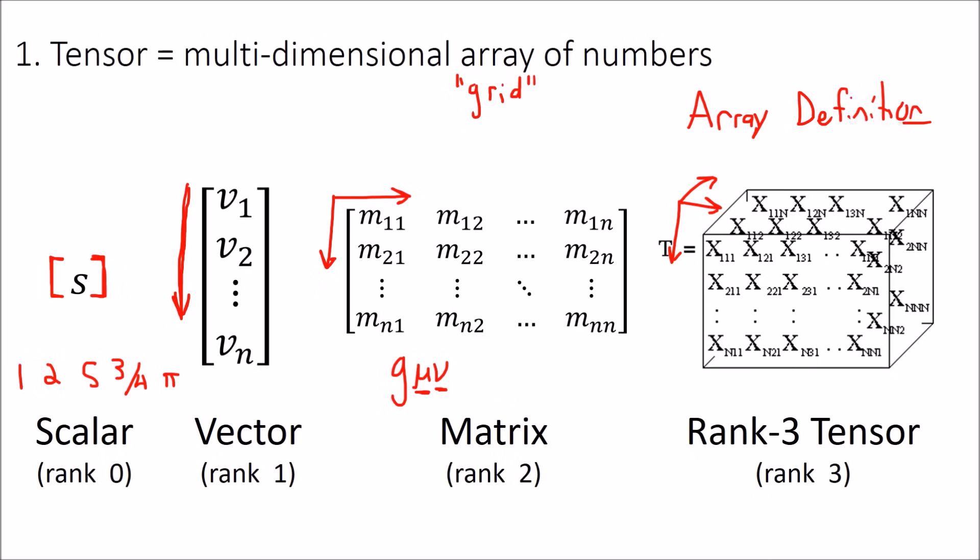So I said that this was a first attempt at a definition. And it does give us some idea of what a tensor is. But this definition is actually wrong. And here's why. Tensors can be represented as multidimensional arrays, but that's not what they fundamentally are.